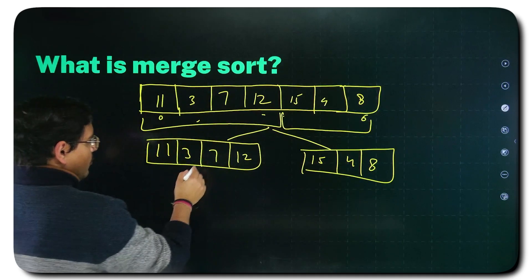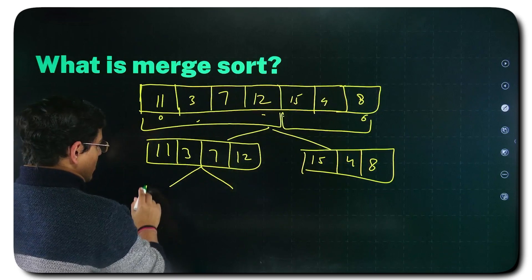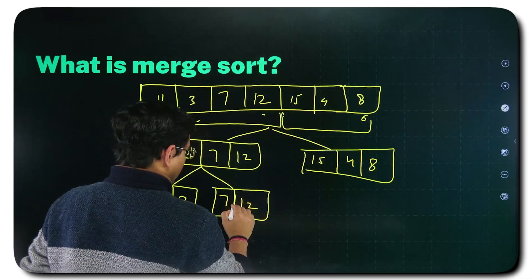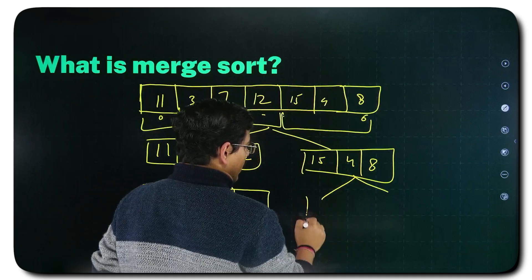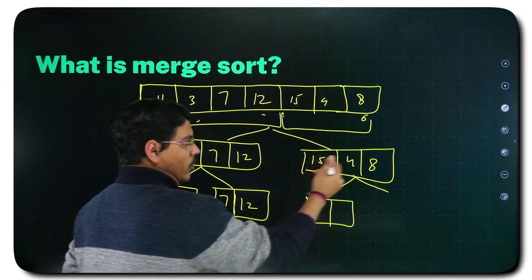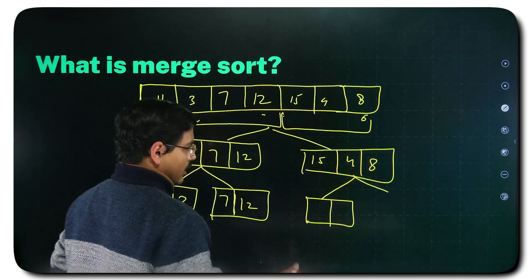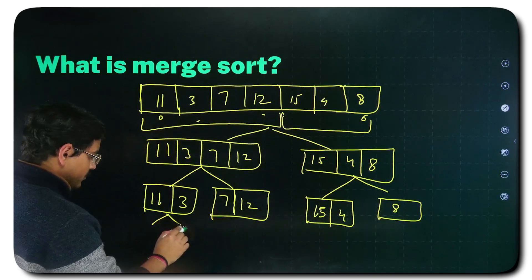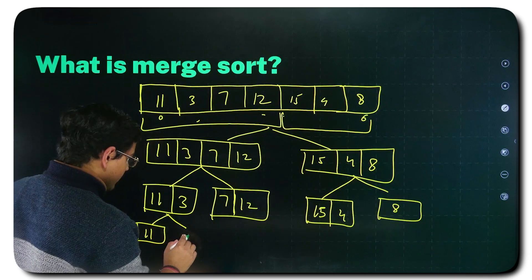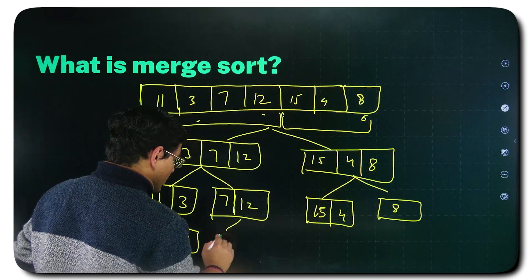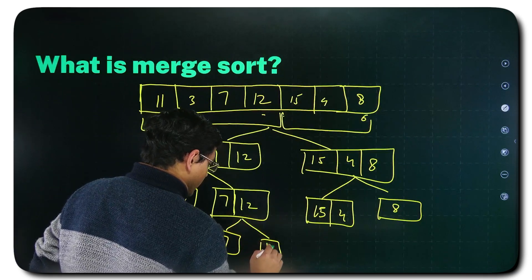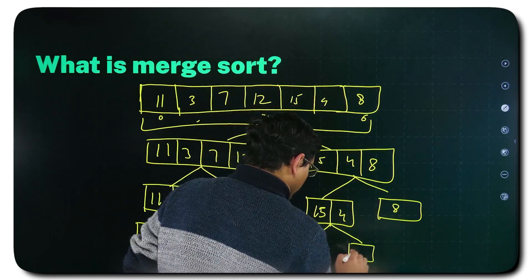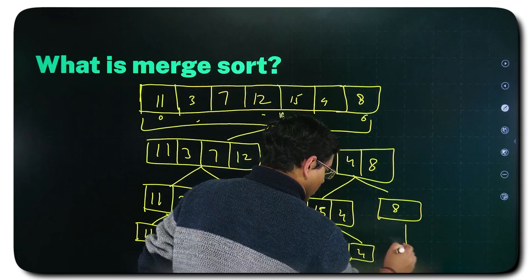Now I split them further. This can be split into two equal halves: 11, 3, 7, 12. This can be split accordingly. Two on one side, one element on one side or one on this side, two on that side. You can do that. 15 and 4 and here 8. Now I split further: 11, 3, 7, 12, 15, 4 and 8 is 8. Of course, you cannot split it any further.